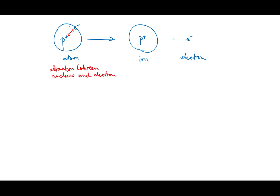That means that in order to remove an electron from an atom, you have to put in sufficient energy to break that attraction. This process is called ionization, and it's always endothermic.